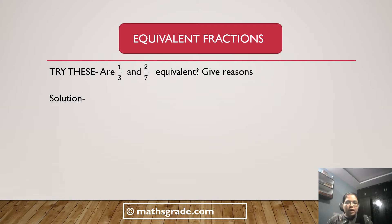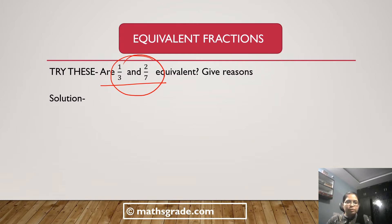The question is: are 1 divided by 3 and 2 divided by 7 equivalent or not? Give reasons. So we have to verify whether the fractions 1/3 and 2/7 are equivalent or not. We have to find out the equivalent fraction of each given fraction and then verify.